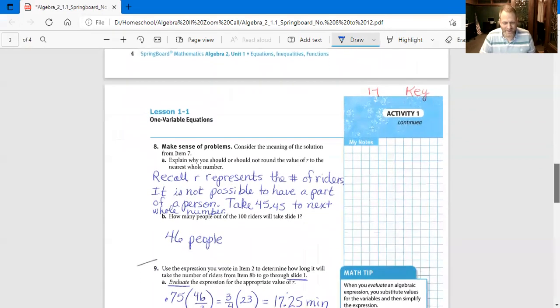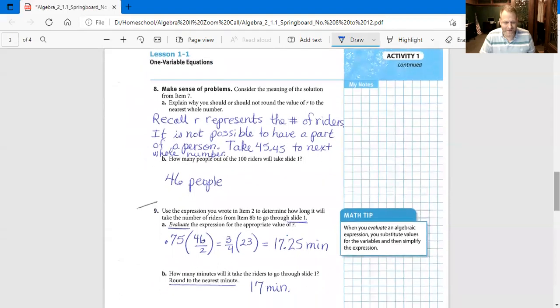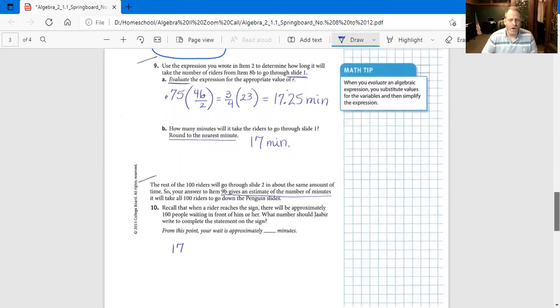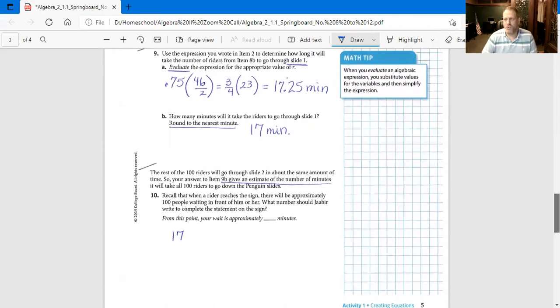Let's look at number 8B. How many people out of the 100 riders will take slide one? We said it was 46 people. Alright, homeschoolers, be sure you are writing the answers down, and when it comes to problems, please write the problem itself down and the answer, and how to solve it.